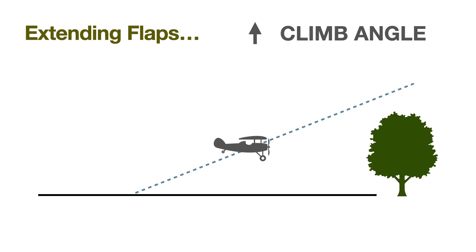Extending flaps can also help us climb out at a slower airspeed and can be a key ingredient in clearing an obstacle at the departure end of the runway.